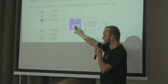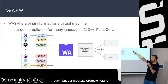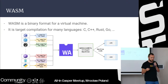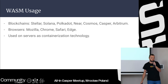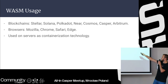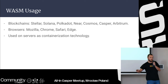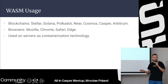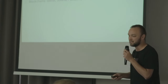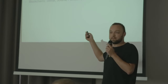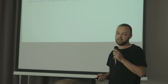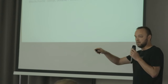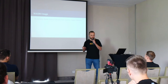You compile to Web Assembly bytecode and then execute against many different virtual machines — some faster, some not — and the virtual machine executes it on your physical machine. Blockchains using Web Assembly include Stellar, Solana, Polkadot, NEAR, Cosmos, Casper, and Arbitrum. That was a dream from 2018-19 — to have successful blockchains with Web Assembly — and now we have them.